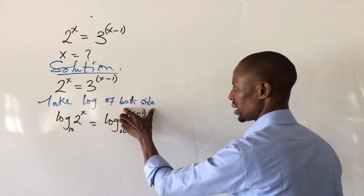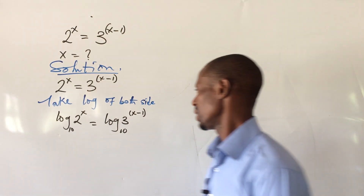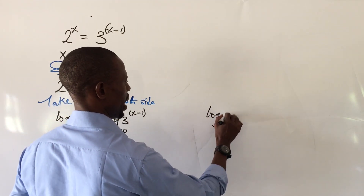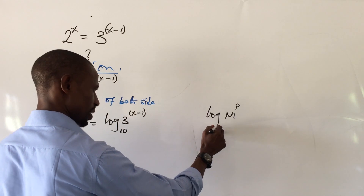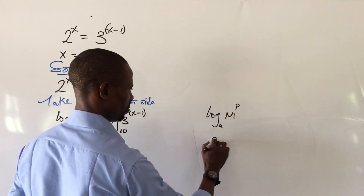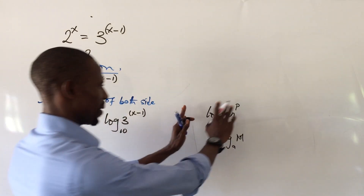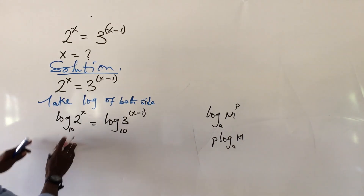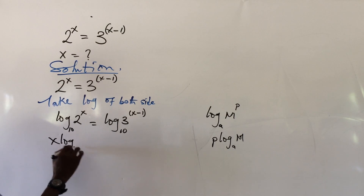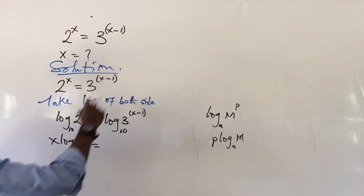Both sides have a power, and there is a law in logarithm that says if you have log of m to the power of p (base a), you bring the power down to give you p times log m (base a). So if we apply this law, we bring x back to get: x log 2 (base 10) equals (x minus 1) log 3 (base 10).